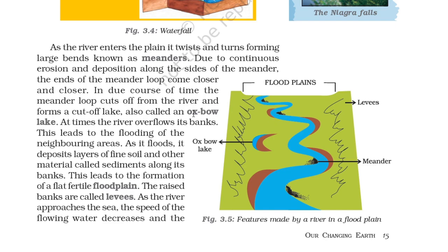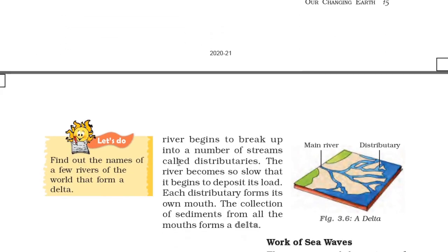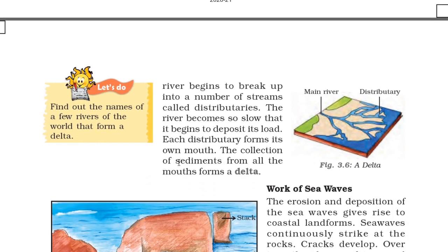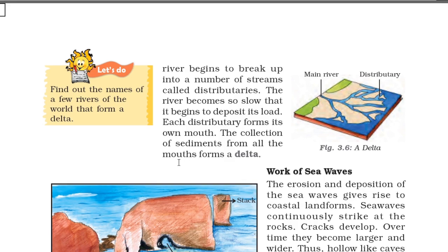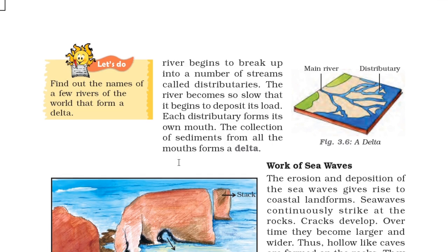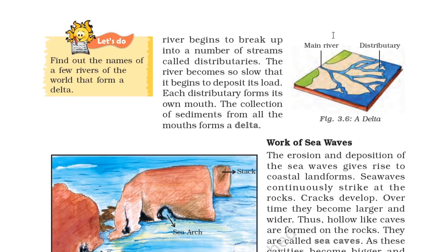As the river approaches the sea, the speed of the flowing water decreases and the river begins to break up into a number of streams called distributaries. The river becomes so slow that it begins to deposit its load. Each distributary forms its own mouth, and the collection of sediment from all the mouths forms a delta, as shown in the figure.